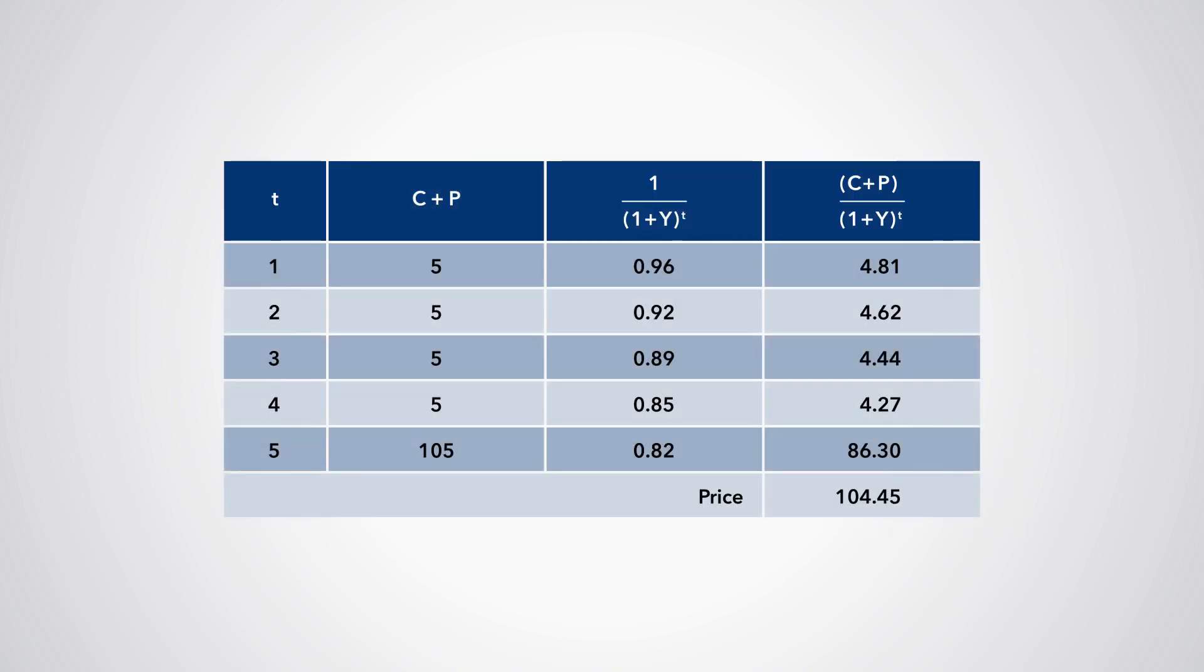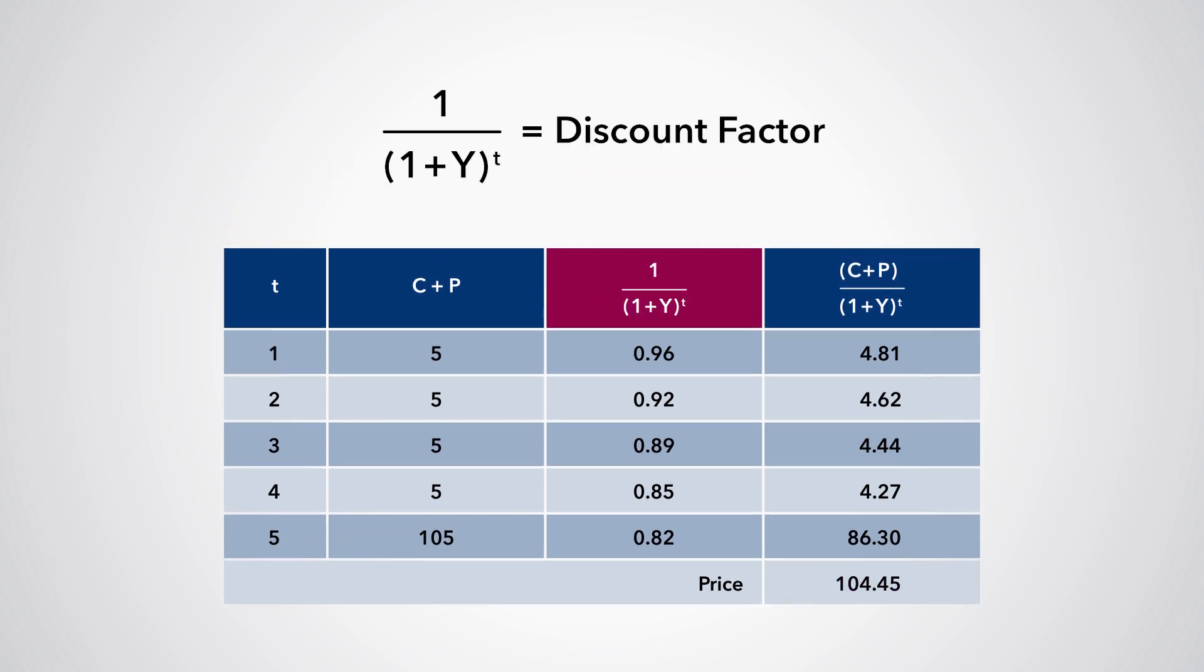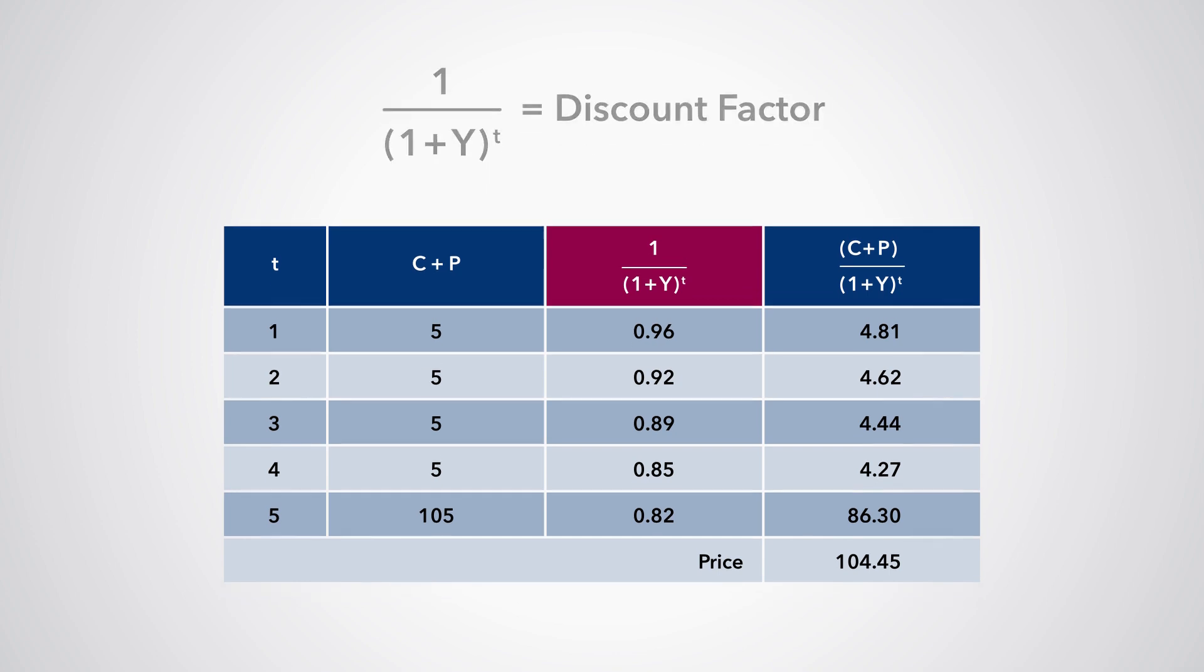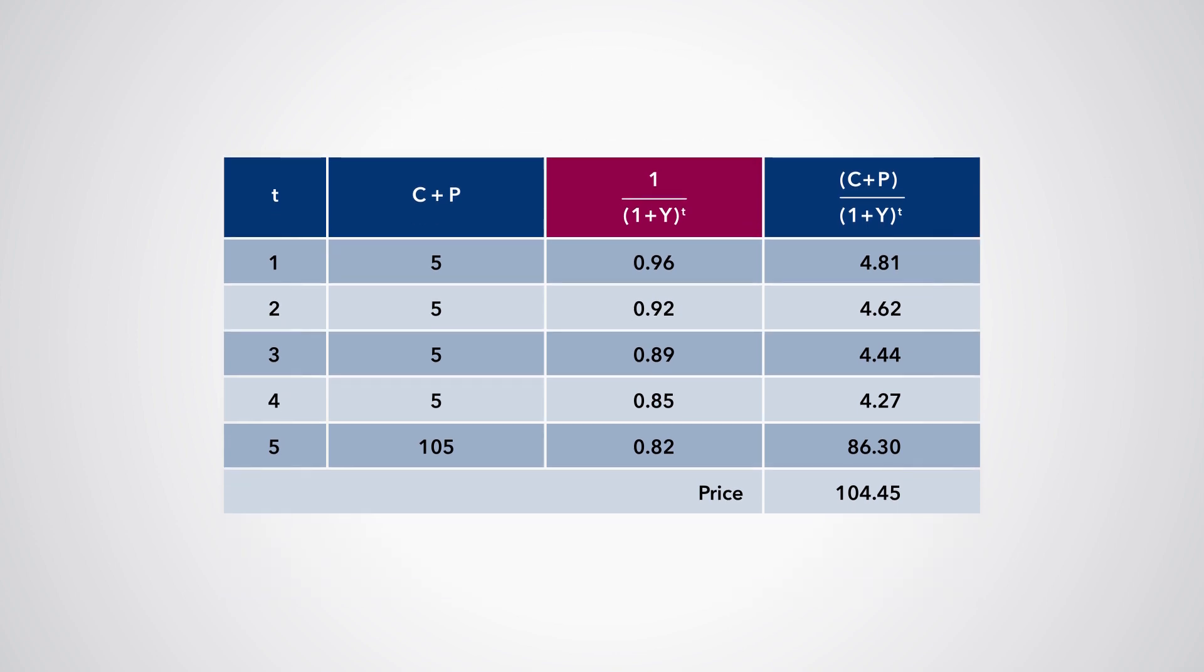We can also put these terms together in a table to see how they have given us the price based on our yield. The term that we have created in this equation, 1 over 1 plus Y to the power of t, can also be described as the discount factor that applies to each cash flow as we receive it at a different point in time and we want to work out what the cash flow is worth today. We can relabel our table to make this clear.